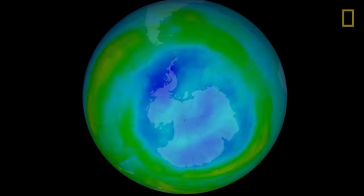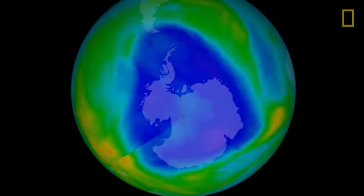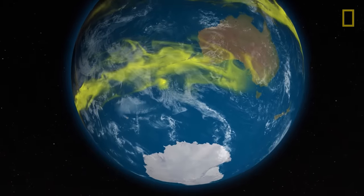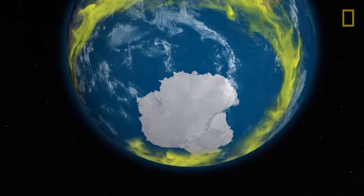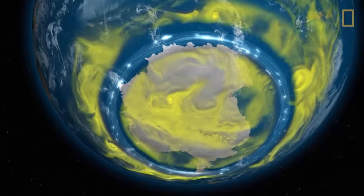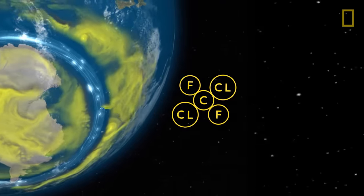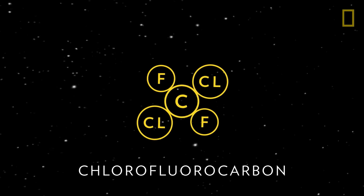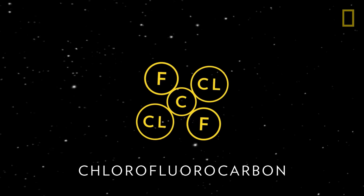But the ozone layer has gotten thinner. Chemicals called chlorofluorocarbons, or CFCs, are the primary culprits in ozone layer breakdown. A CFC is a molecule that contains the elements carbon, chlorine, and fluorine.